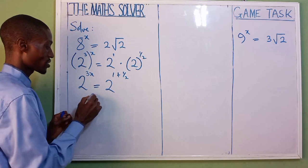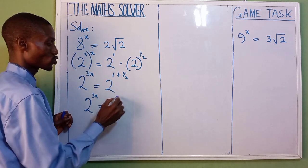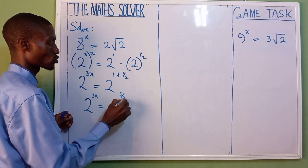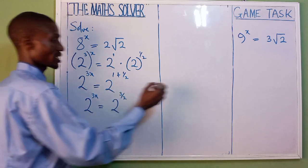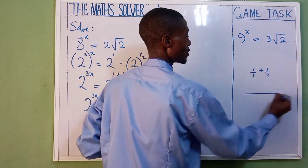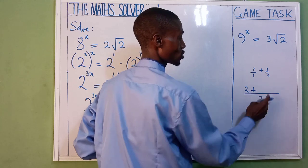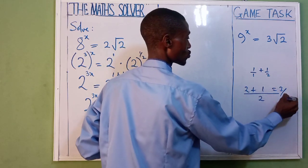So we have 2 raised power of 3x equal to 2. Now, this is going to be 3 over 2. By the time we add it together, that is 1 over 1 plus 1 over 2. 1 in 2, 2. 2 times 1, 2, plus 2 in 2 is 1. 1 times 1, 1, which is 3 over 2.